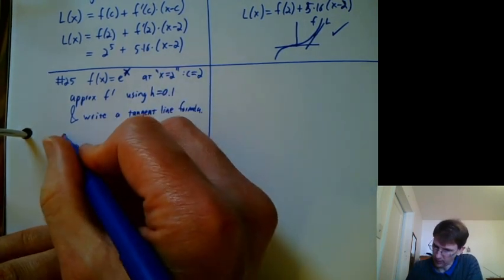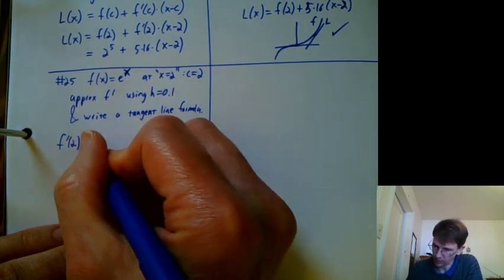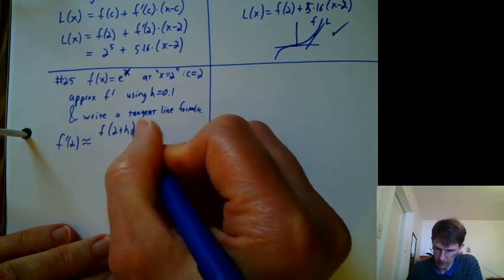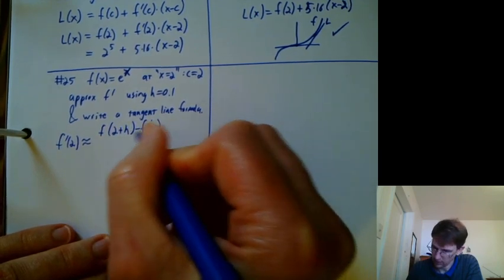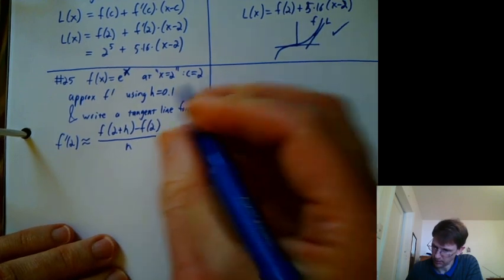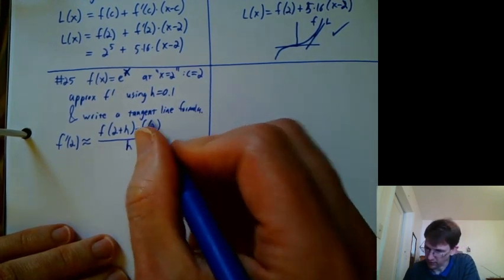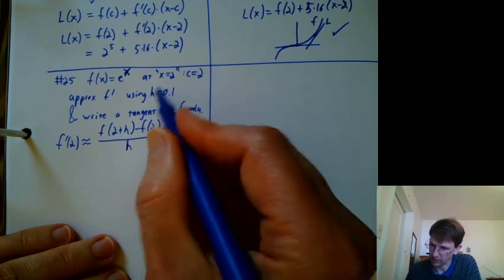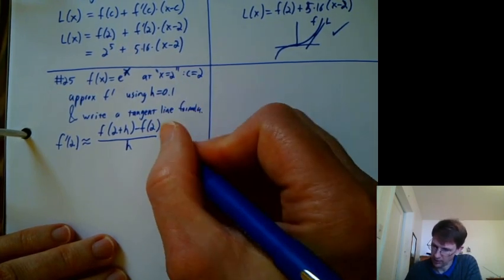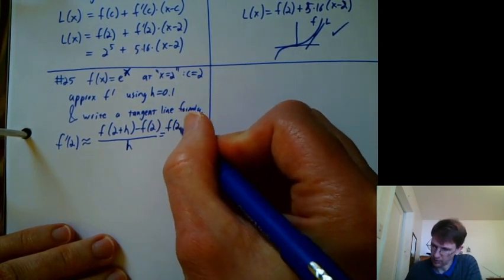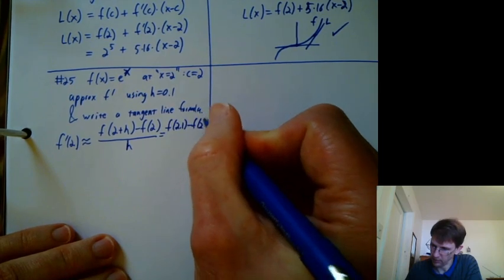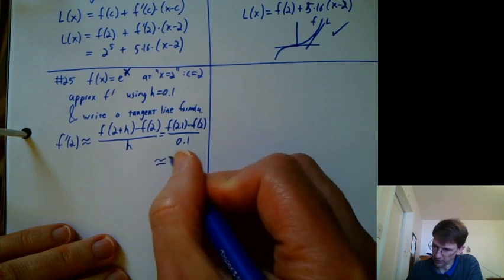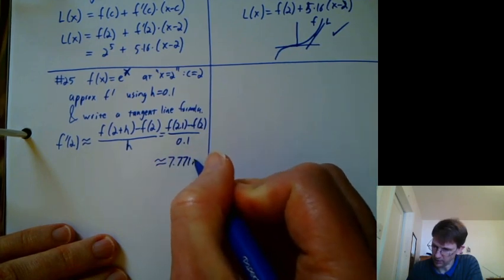So I could say f prime at 2 is approximately f at 2 plus h minus f at 2 over h. And I know the definition of derivative would have h go to 0, but here we're just using h equals 0.1. So I can say this is f of 2.1 minus f of 2 over 0.1. If you plug that into Desmos, you get 7.771-ish.